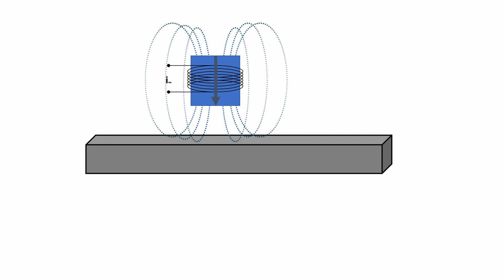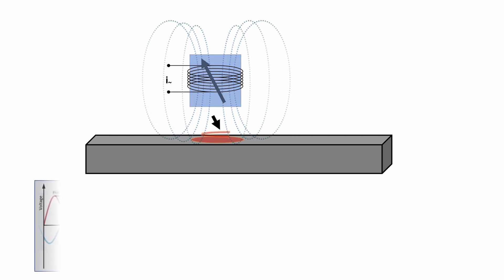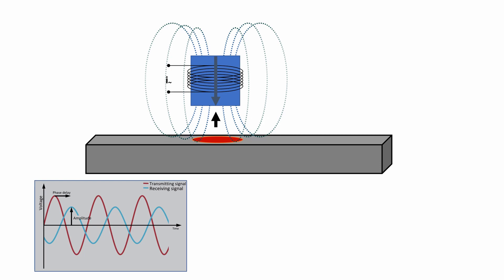Now we have to get the signal on the screen somehow. Here we see our alternating magnetic field and at the lower left corner the corresponding signals, the transmitting signal and the receiving signal.